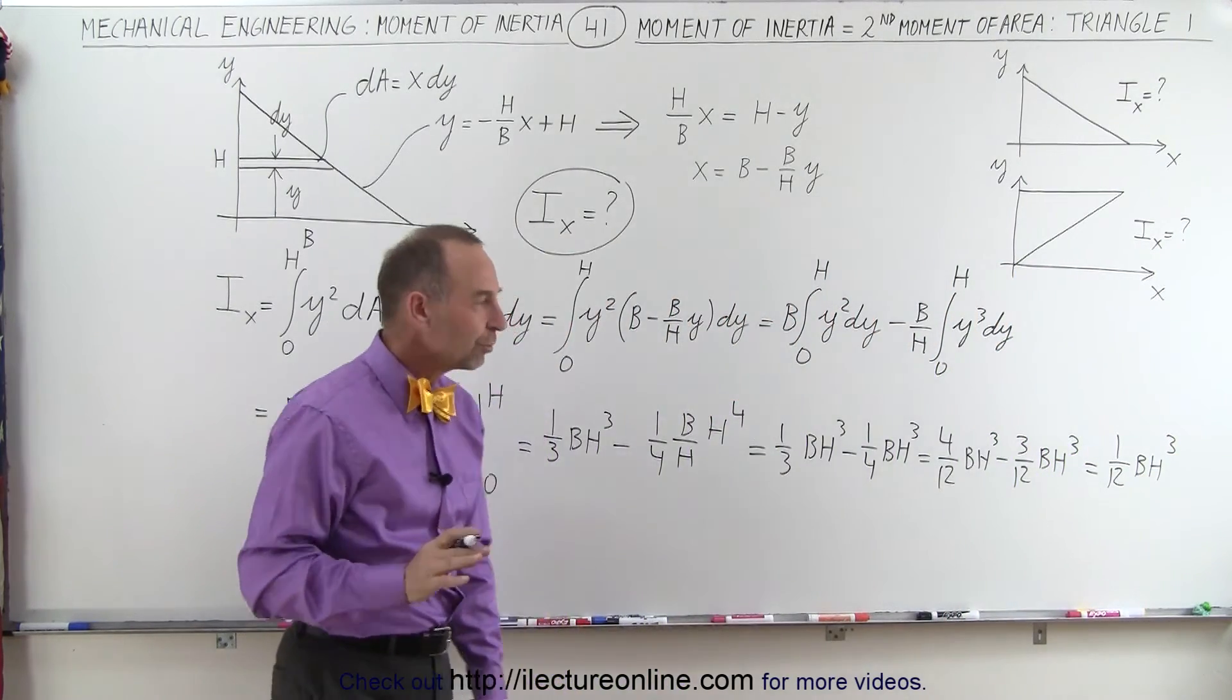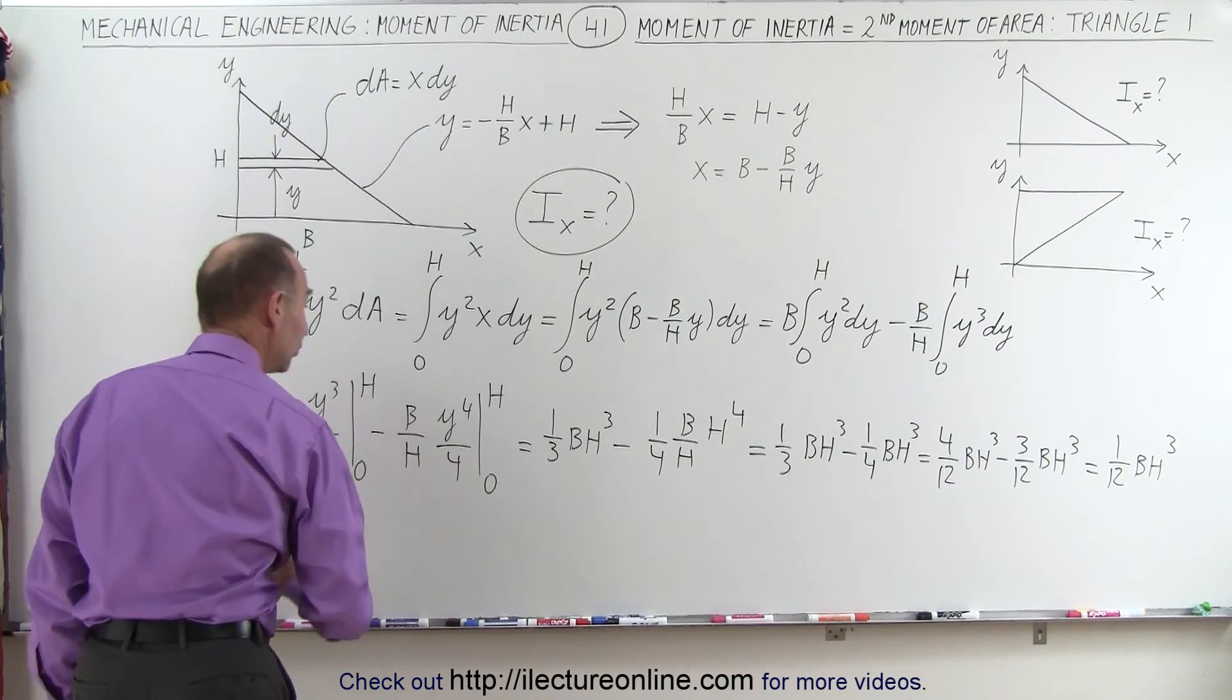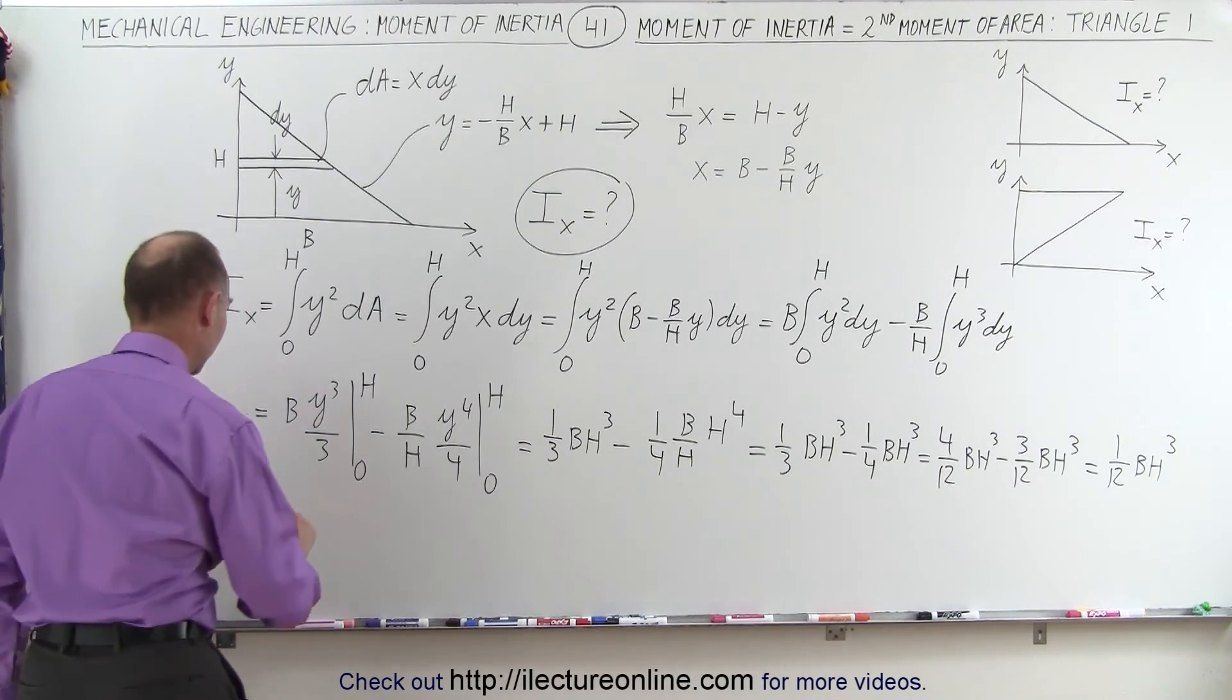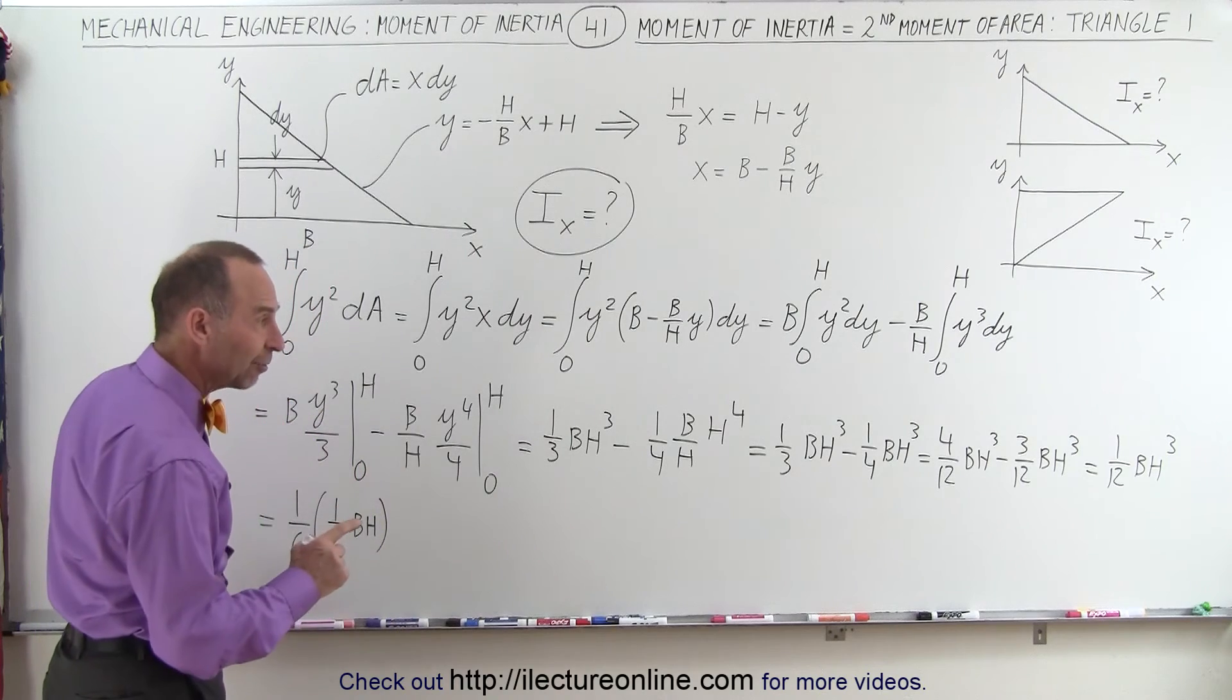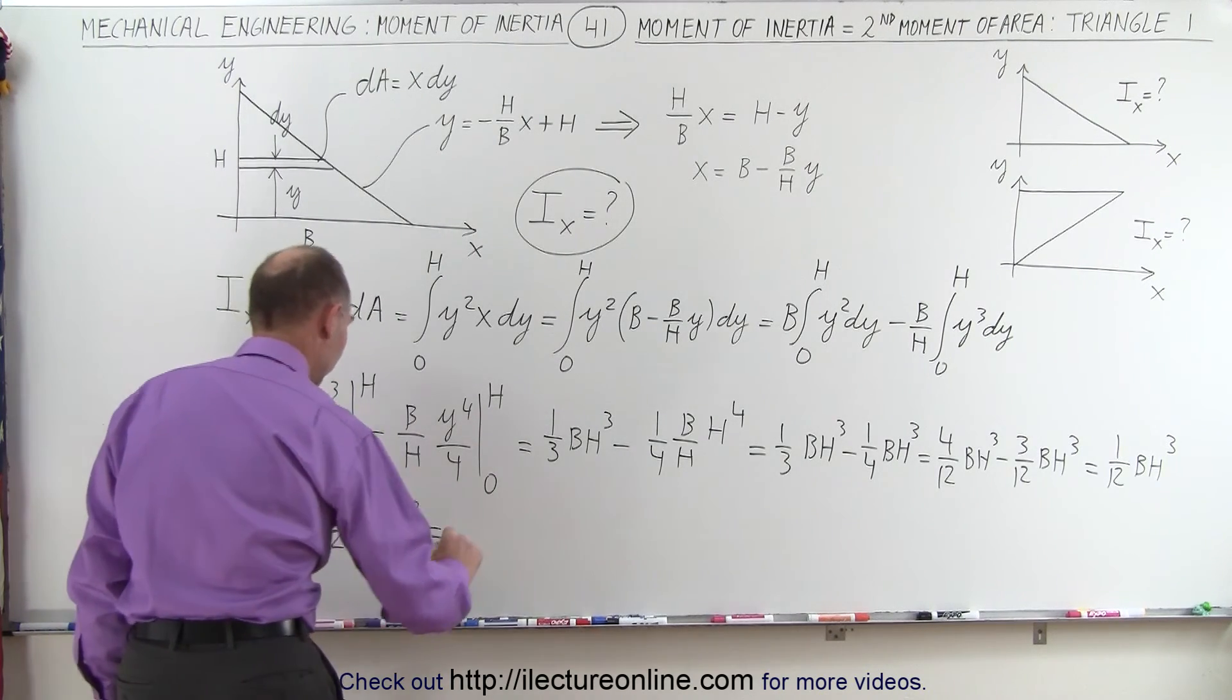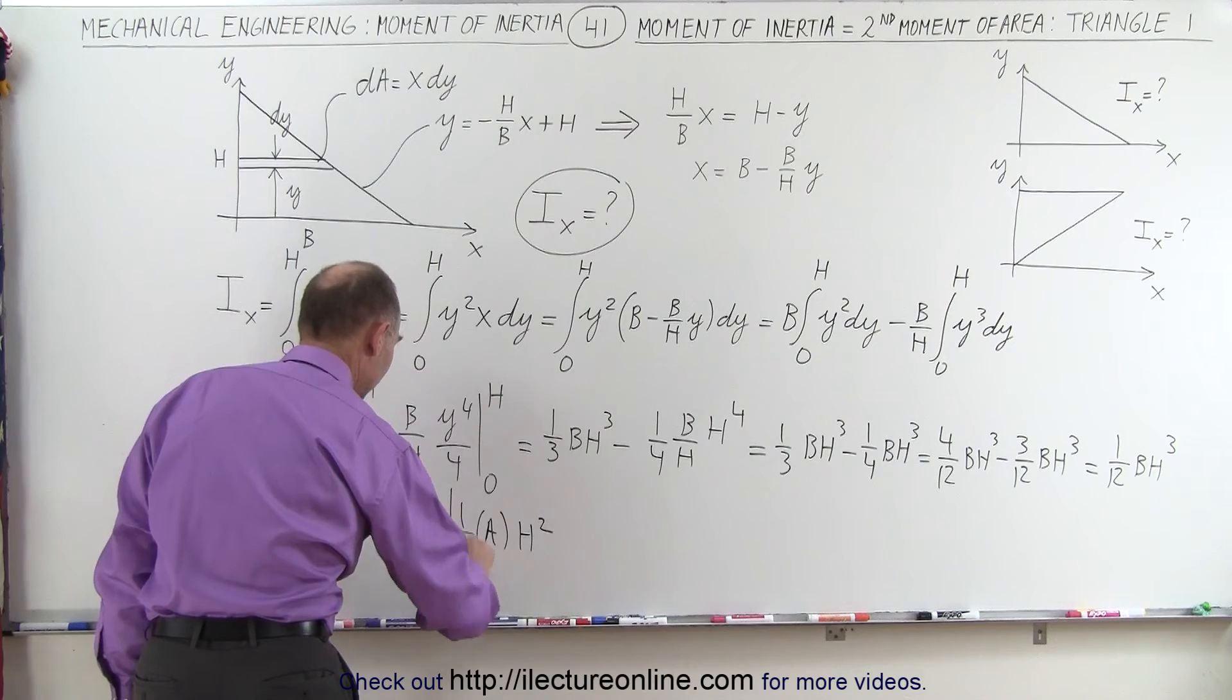But now let's solve it in terms of the area of that triangle. So this is equal to, now we know that the area of that triangle would be 1 half the base times the height. So it would be 1 over 6 times 1 over 2 base times the height. And then we have left an h squared.